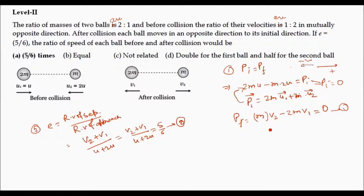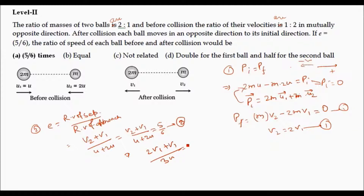From equation 1 we get the relation V2 = 2V1. Substituting V2 = 2V1 into equation 2: (2V1 + V1) / 3U = 5/6, which gives 3V1 / 3U = 5/6, and therefore V1/U = 5/6. Here V1 is the velocity of the ball after collision and U is the velocity before collision. So for the first ball, the ratio of speed before and after collision is 5/6.